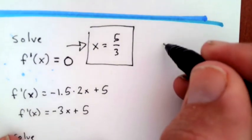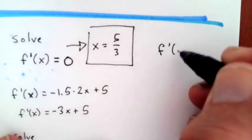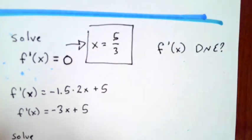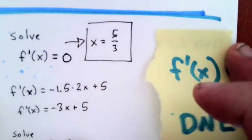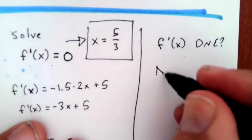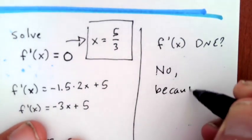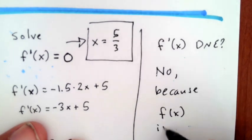I also need to see if there's any way that f'(x) does not exist, because I could also have critical points where f'(x) DNE. But in this case, the answer is no, because we're dealing with a quadratic polynomial which is always continuous.